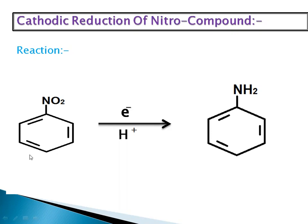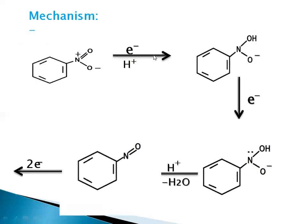The nitrobenzene, after reduction — after addition of hydrogen — gives us an aniline compound. Aniline is nothing but a benzene with an amine group. So our reactant is nitrobenzene and the product is aniline. Let's move further with its mechanism.